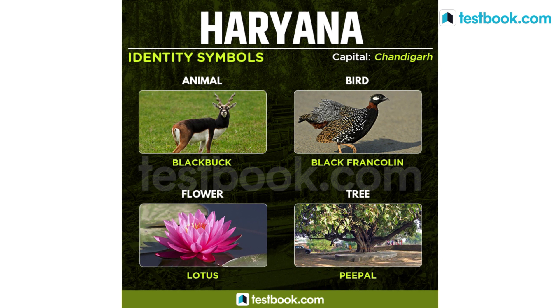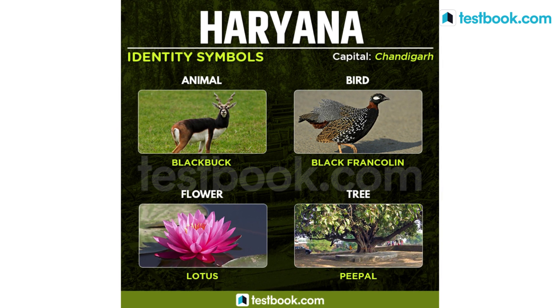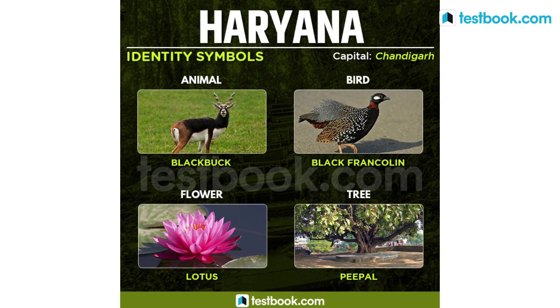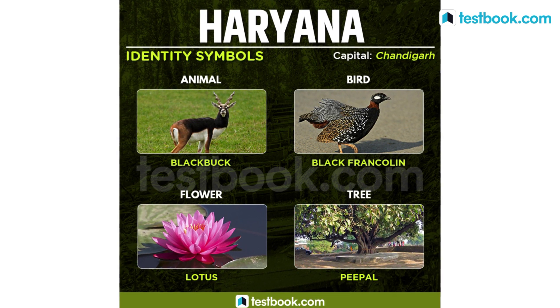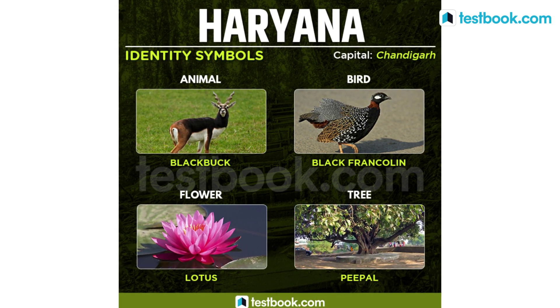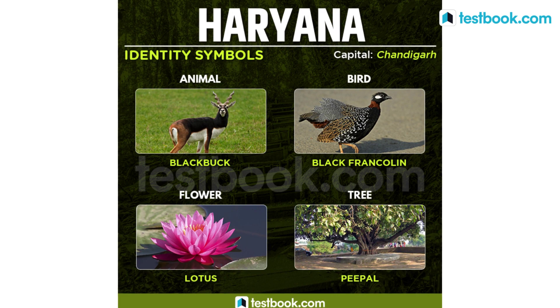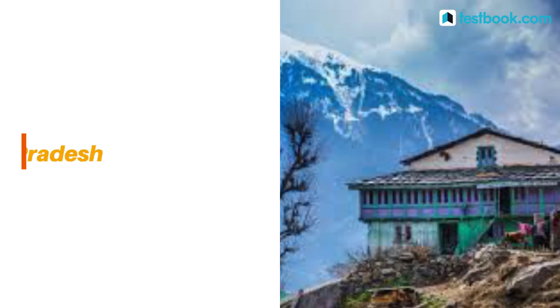Black Buck is the state animal of Haryana, state bird is Black Francolin, state flower is Lotus and state tree is Peepal.